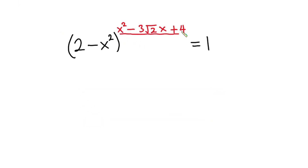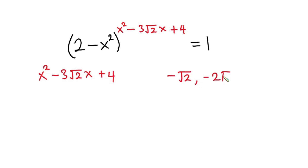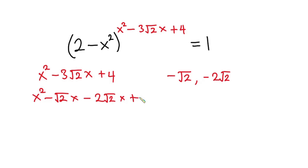First of all, I'm going to break this exponent down. So we have x² minus 3√2·x plus 4. From here, I'm going to look for two values that when you multiply give positive 4, but when you sum them give negative 3√2. The numbers are negative √2 and negative 2√2. So this expression becomes x² minus √2·x minus 2√2·x plus 4.